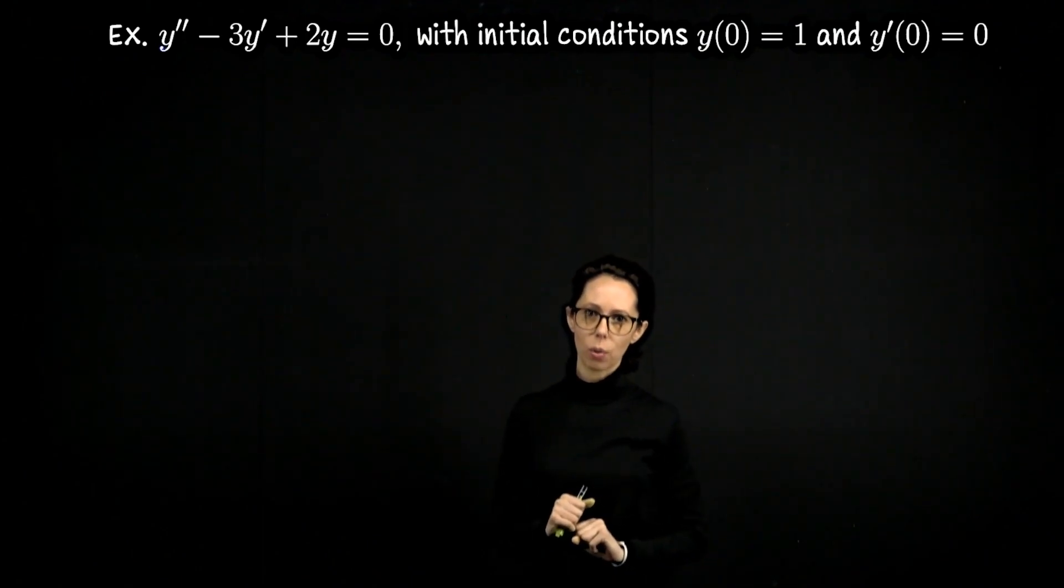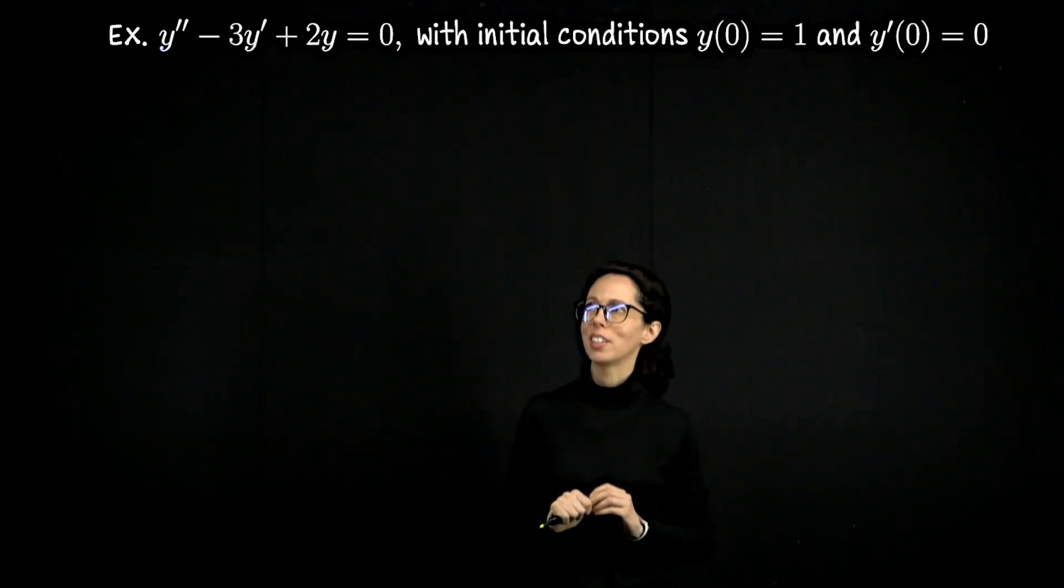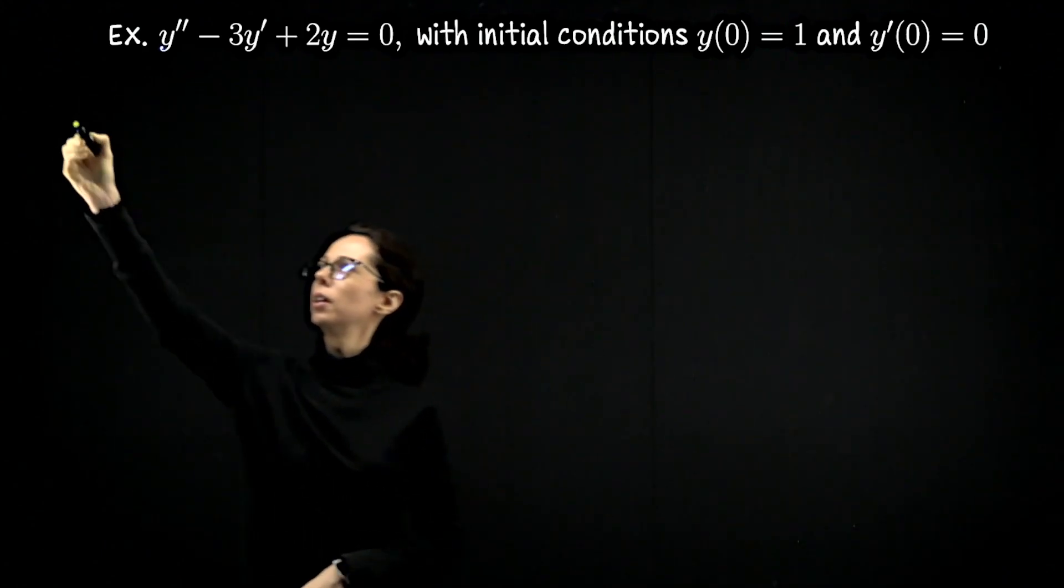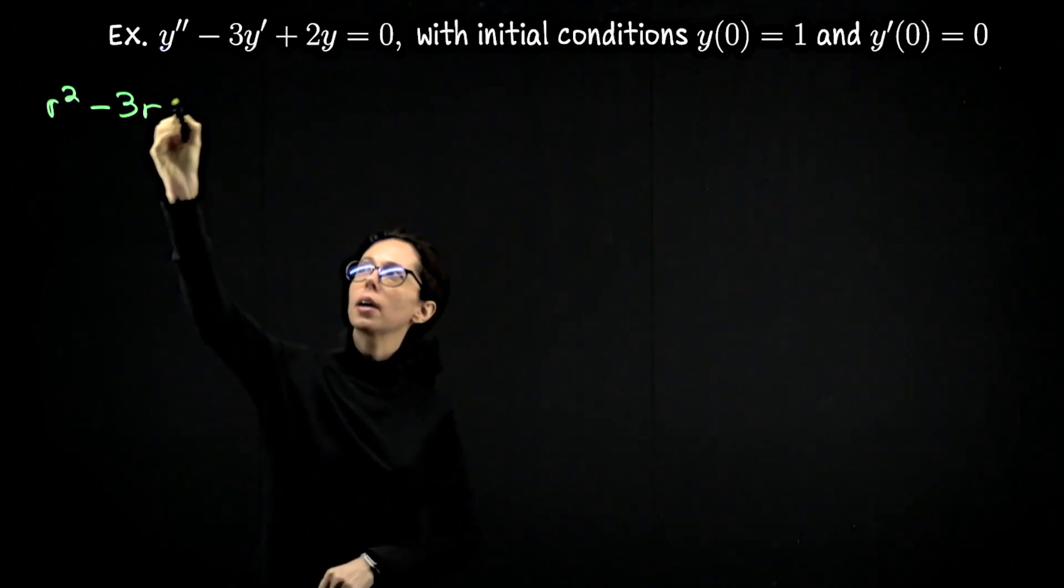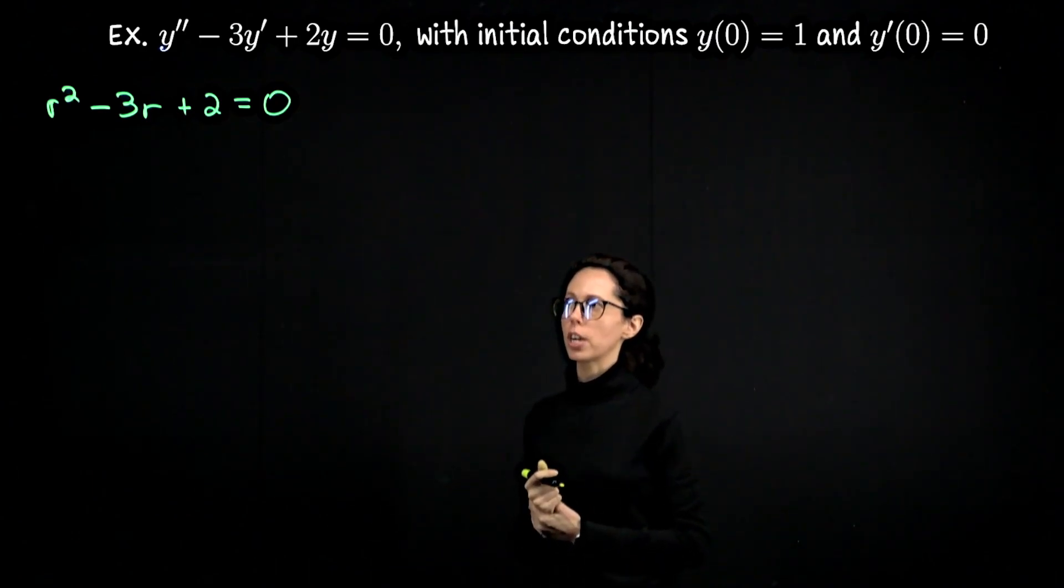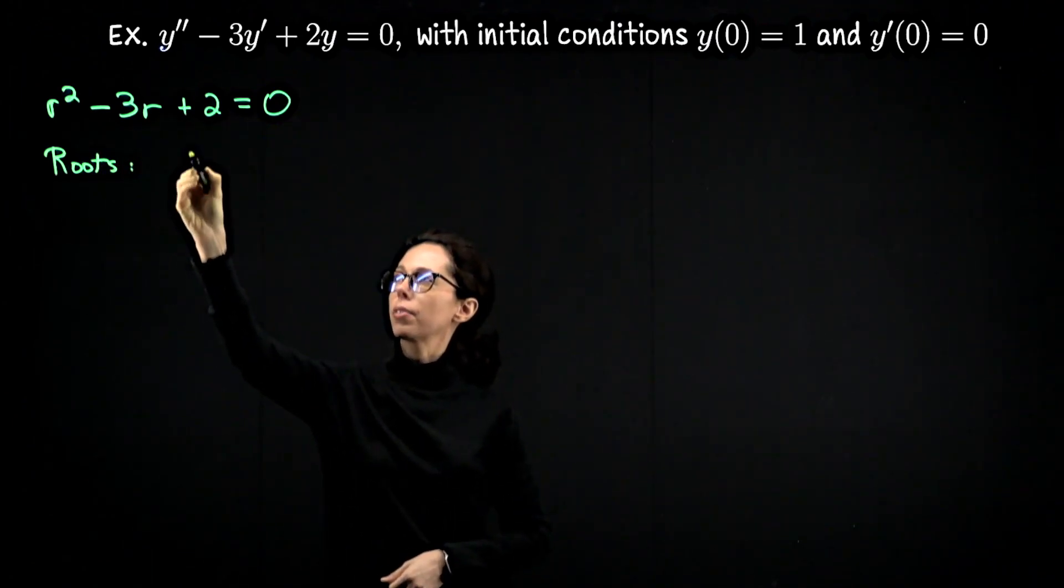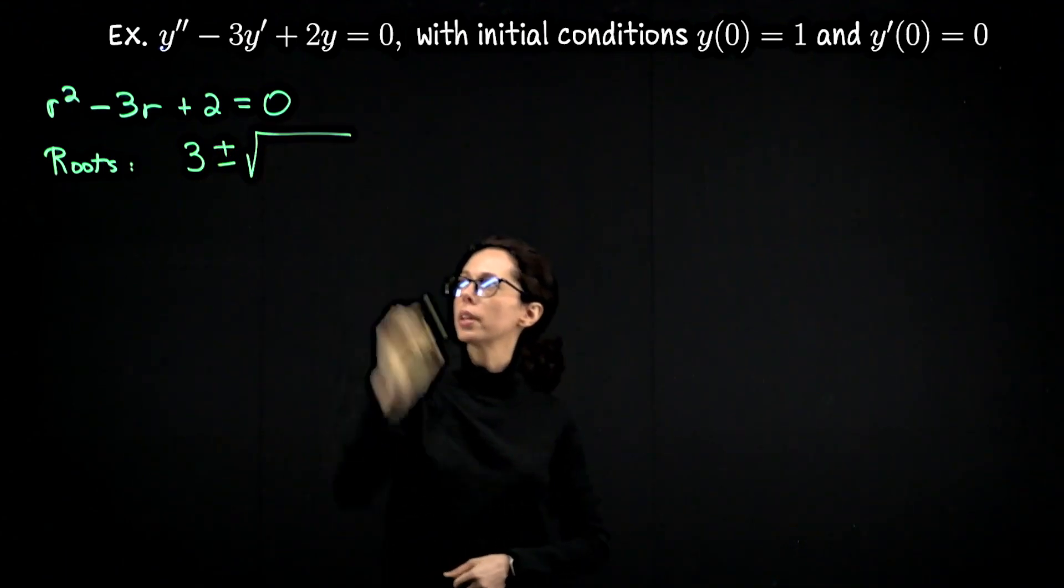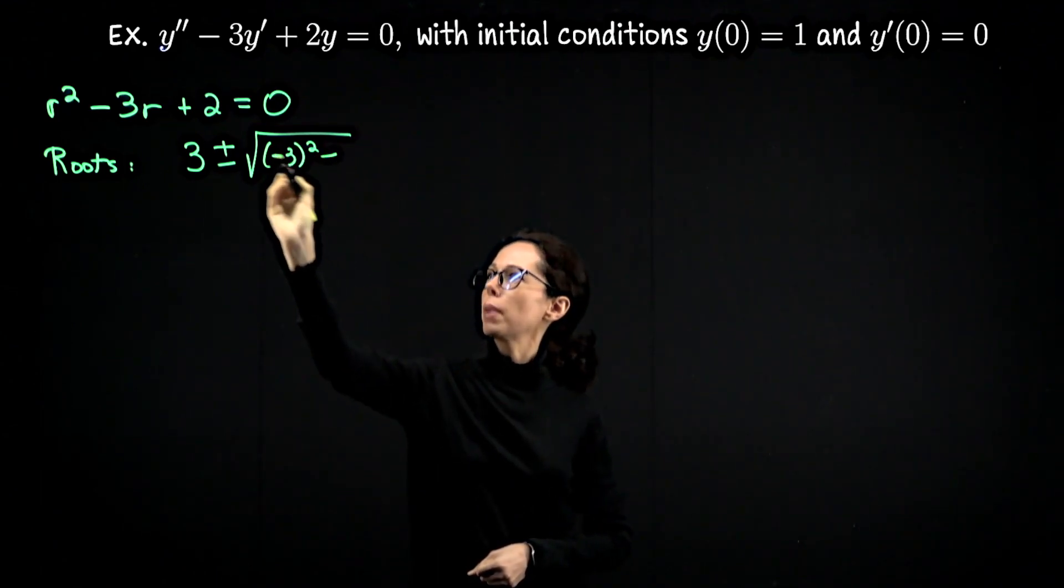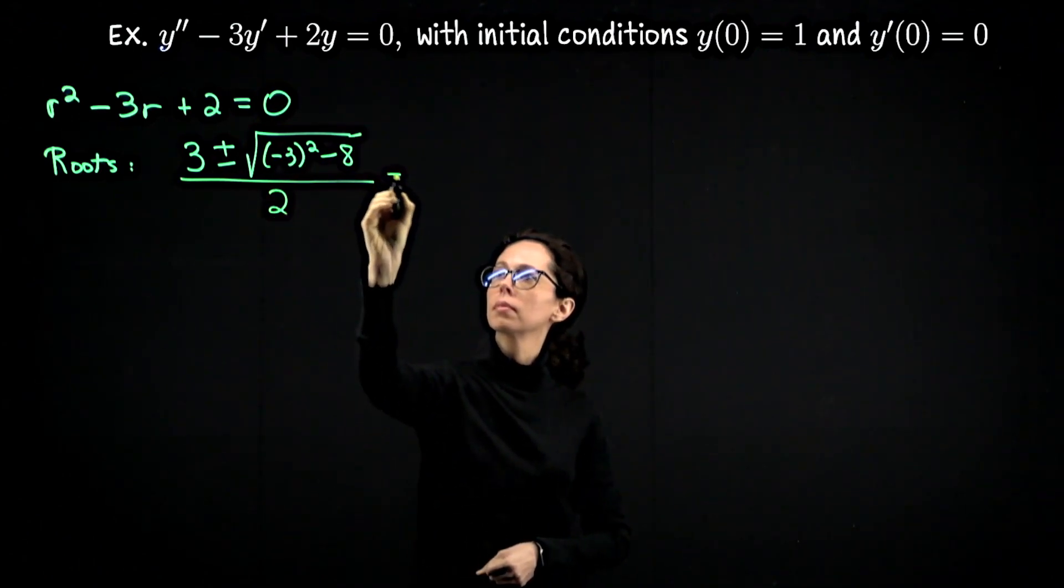So the characteristic equation for this second order differential equation is going to look like the same left-hand side, but we basically switch it into a quadratic. So we're going to have r squared minus 3r plus 2 equals zero. This actually factors, but let me just set up the quadratic equation. So we'll say the roots are negative b, so that's negative negative 3, 3 plus or minus the square root of negative 3 squared minus 4ac. So that's minus 4 times 1 times 2. All over 2 times 1.